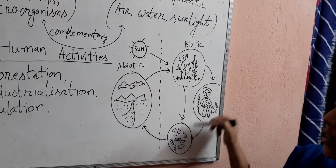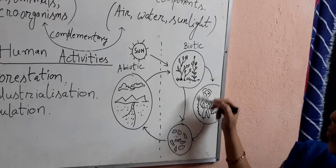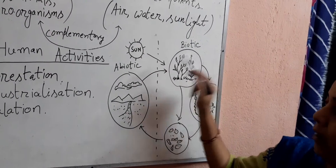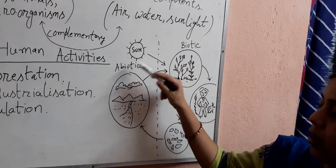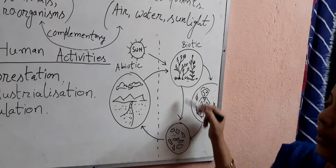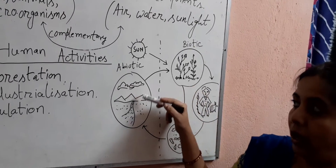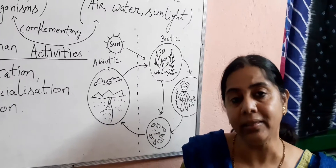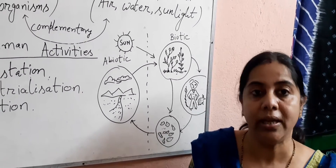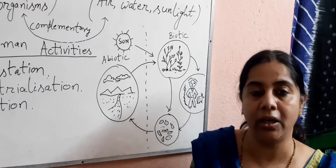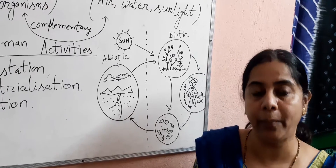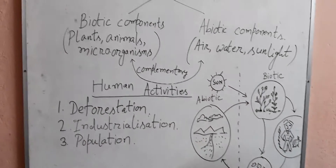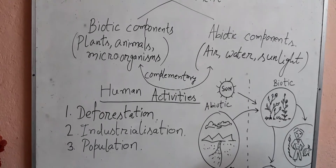Now you can see that all the components — both biotic and abiotic — are dependent upon each other. We human beings are totally dependent on both the components for our survival.